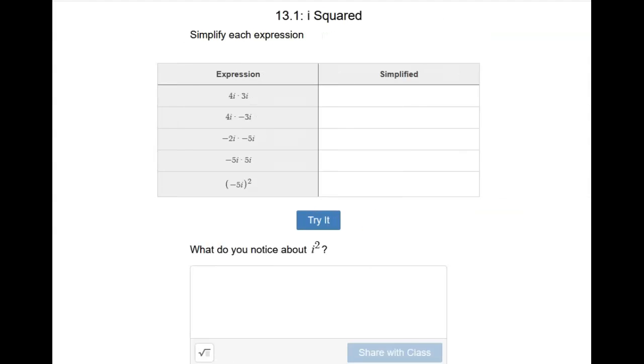The first thing we're going to look at is i squared. We're going to simplify each one of these expressions. The first one, we have 4i times 3i.